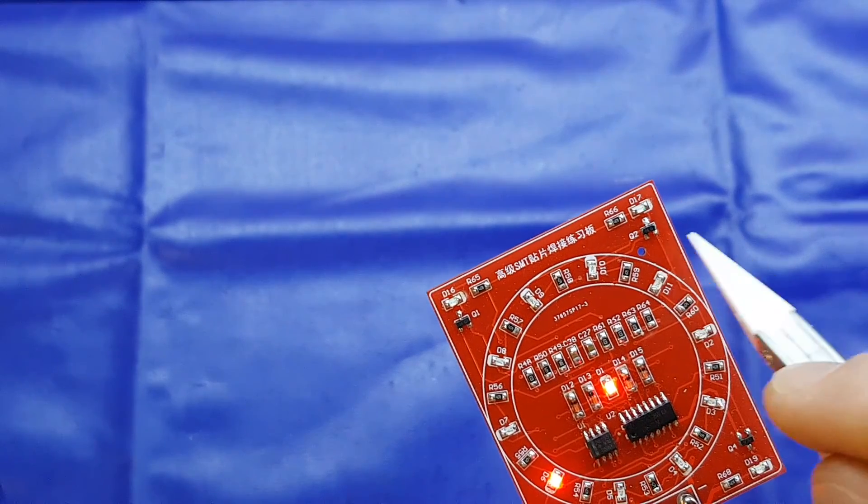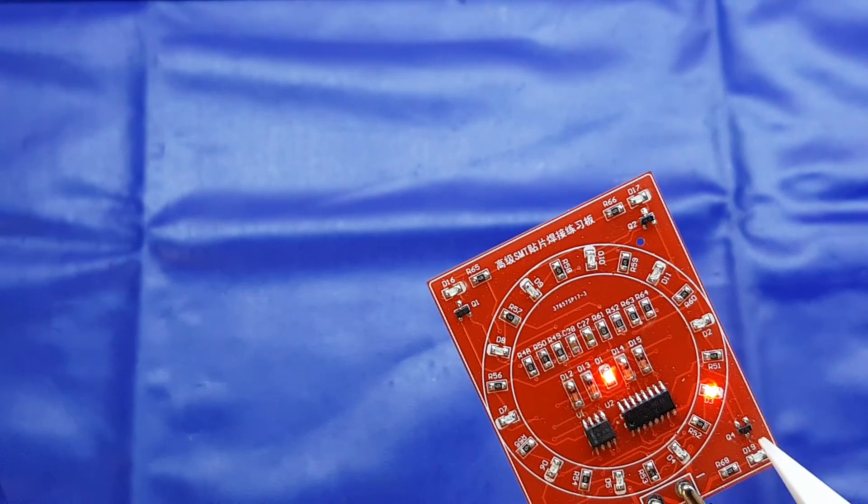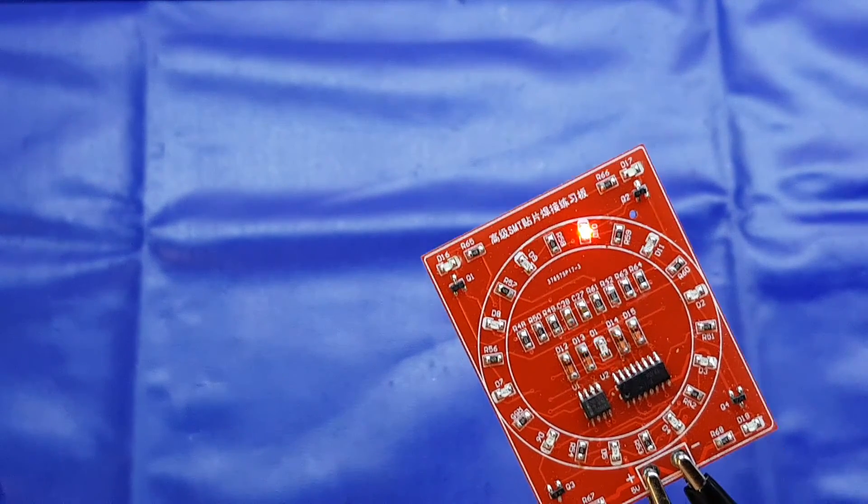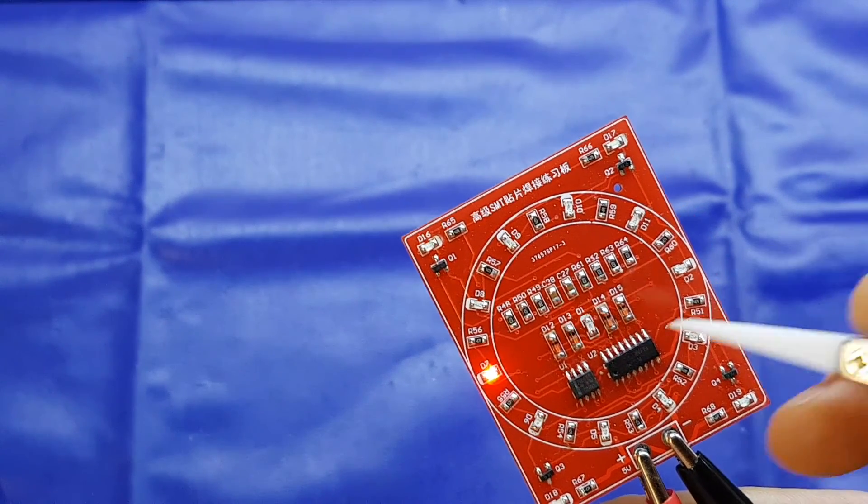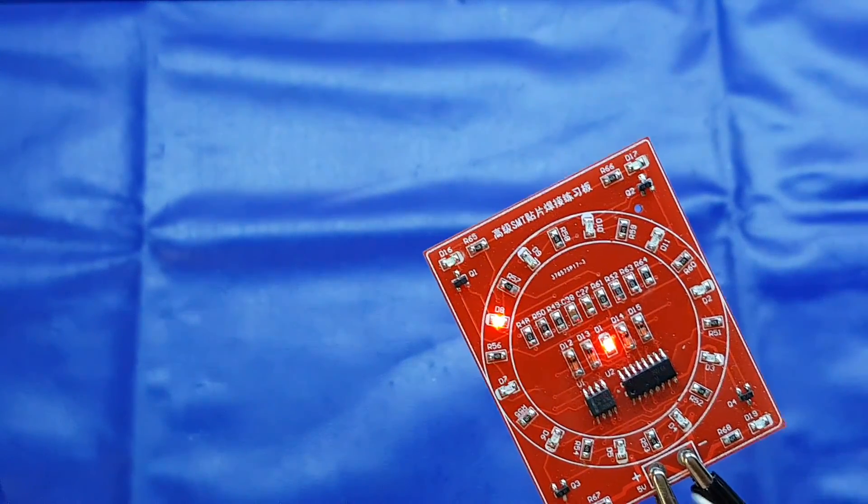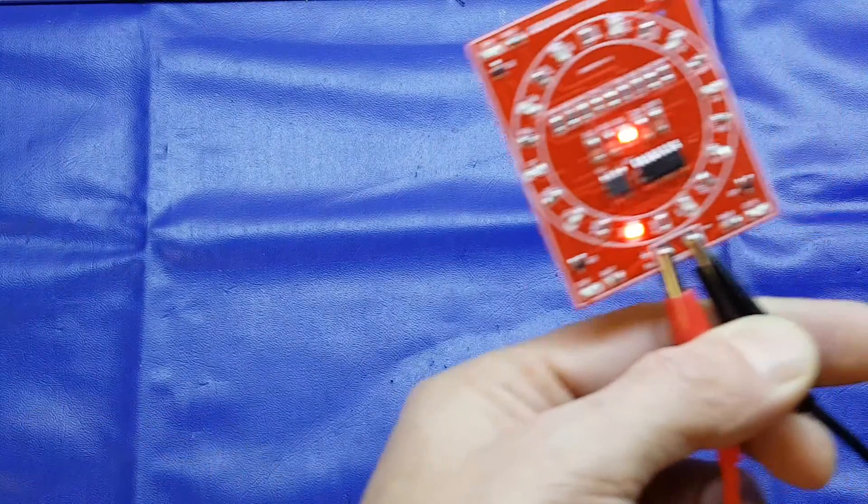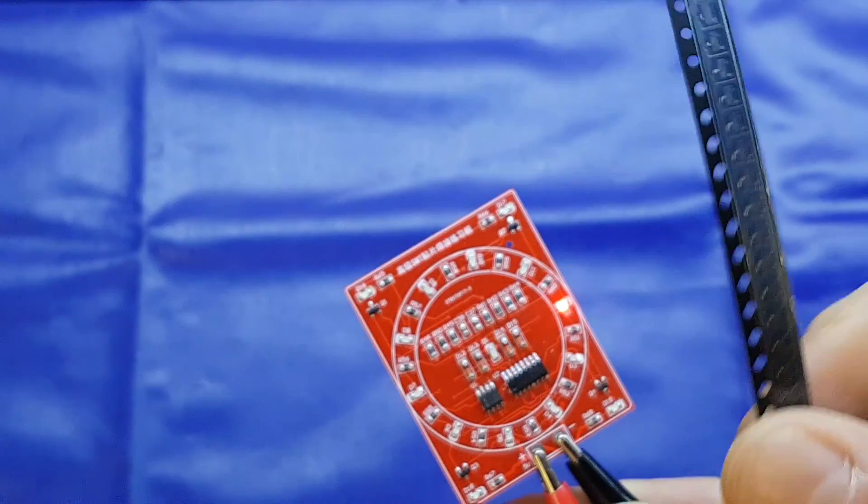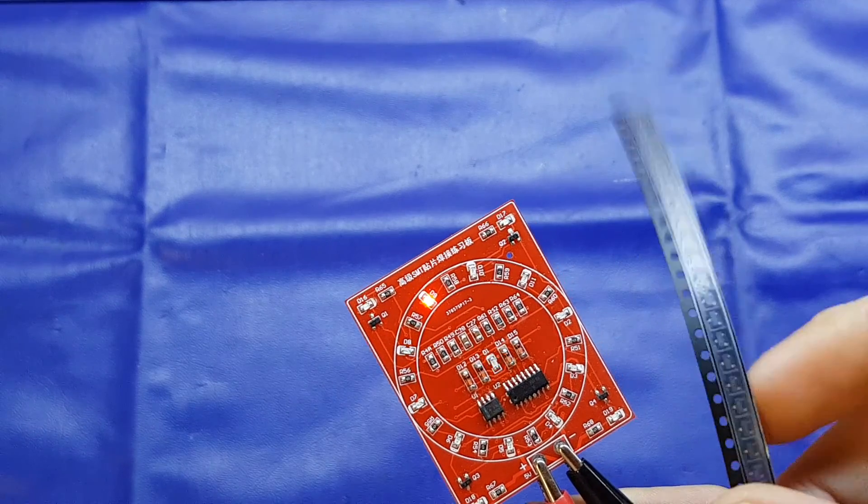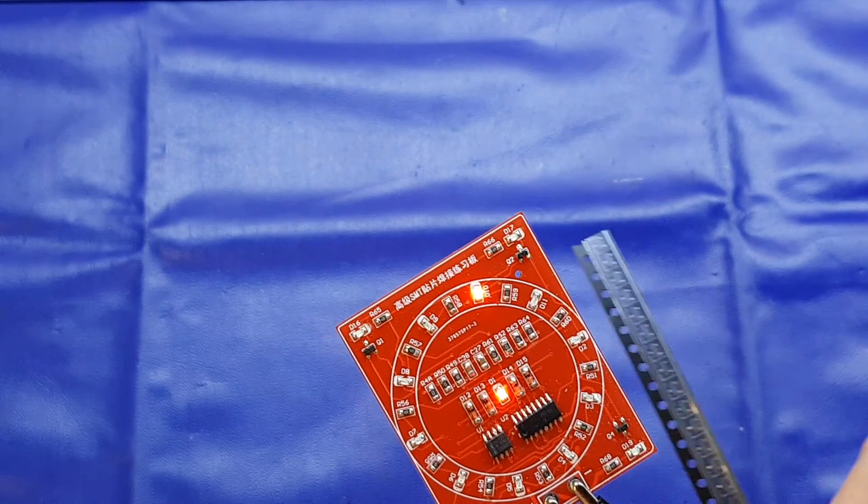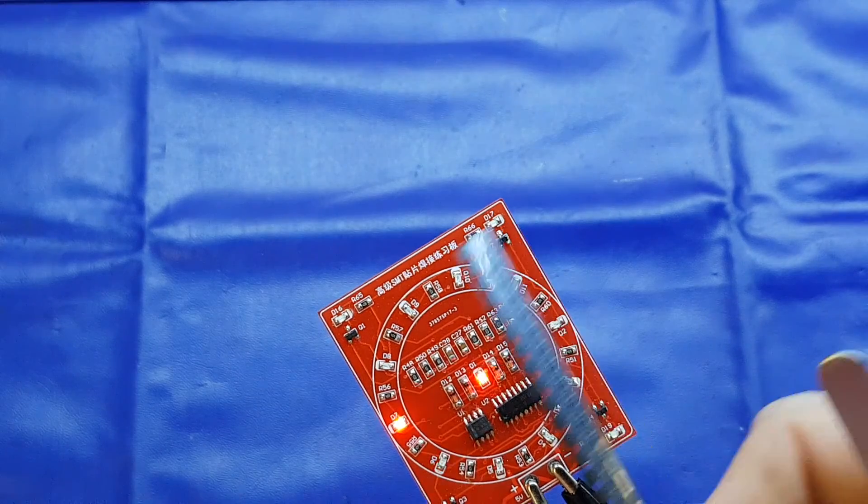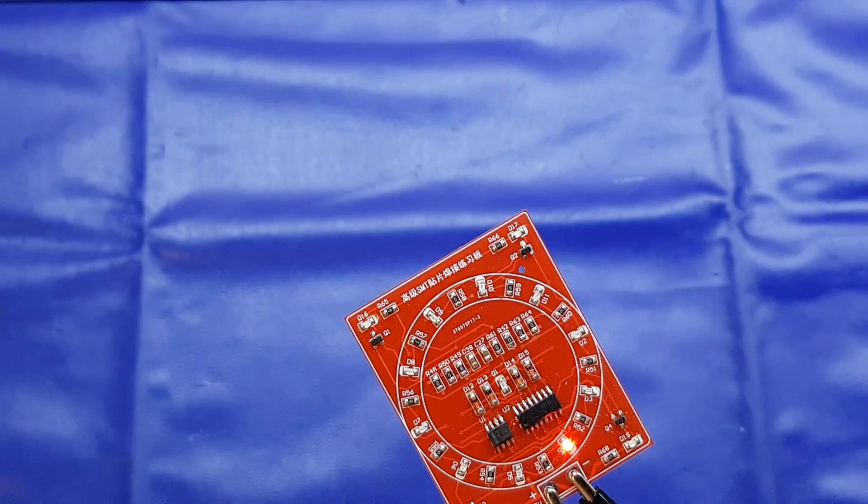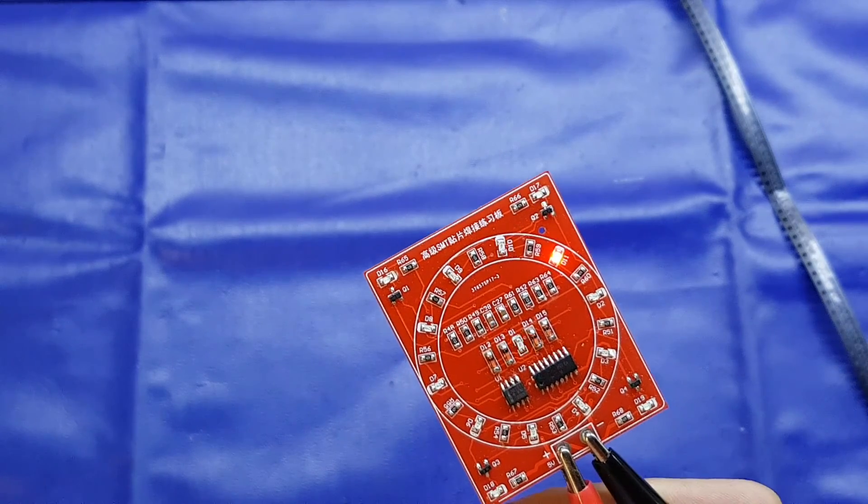So the only thing I could really put it down to was these transistors being at fault. Now these are marked M6. I've not looked online to see the pinout of these, I could find very little on the M6, but I do have a little strip of SOT23 packaged 8050s. So I thought today what we'd do is basically take these transistors off and replace them with 8050s and see if the kit actually works.